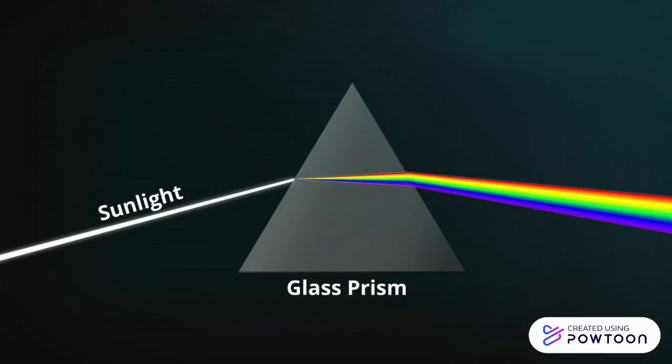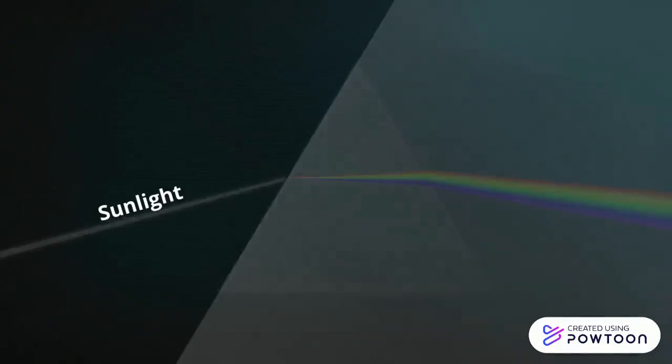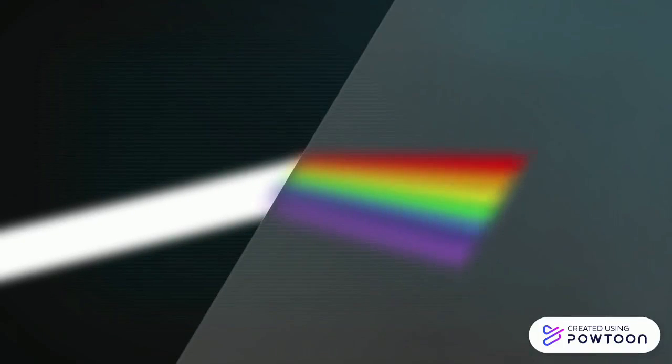Light slows down as it passes through the glass at an angle, creating the separation of visible light, which causes light to split up and spread out, creating a rainbow.